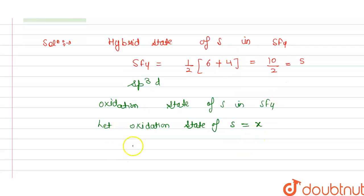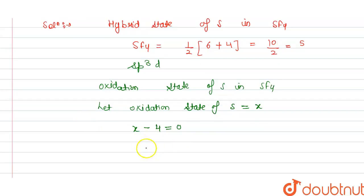This will become X, and fluorine is -1. So -1 multiplied by 4 is -4, and this equals 0. From this, we get X equals +4.